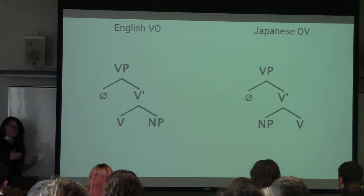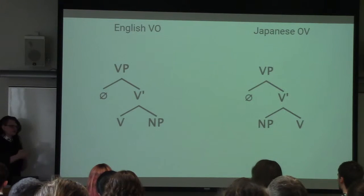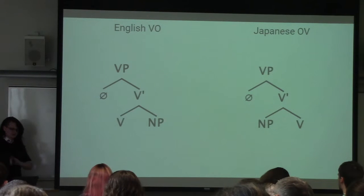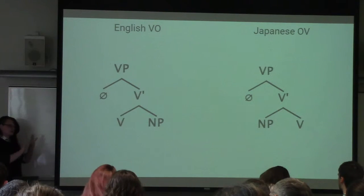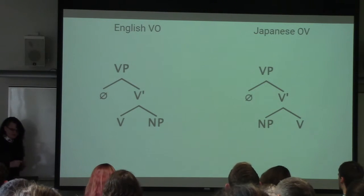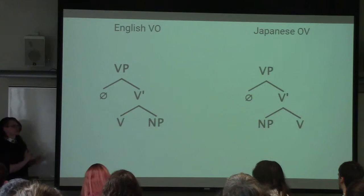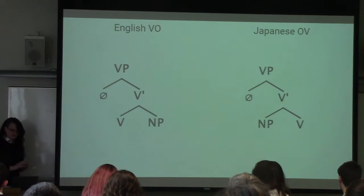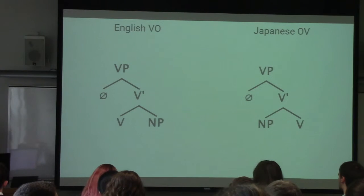So the sort of primary researchers on Lushootseed are Tom Hess, Dawn Bates, and Vi Hilbert, and they have put forth in a number of papers, including the Lushootseed dictionary, that Lushootseed is subject-verb-object and the verb raises to make the surface level appear, the basic word order to appear to be verb-subject-object. Based on the research that I have done, I would argue that there is another position, sort of above, that things move into, that I'm sort of considering the focus position, and it allows sentences to sort of be reworked.